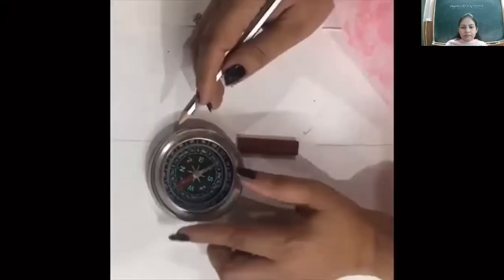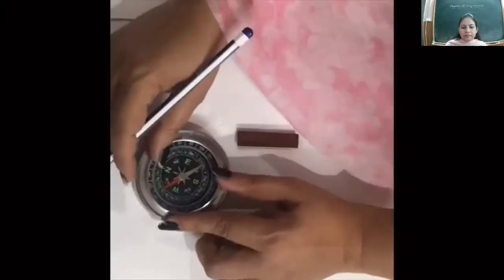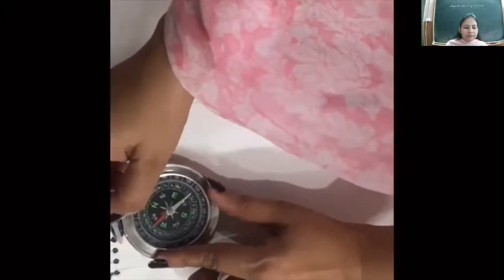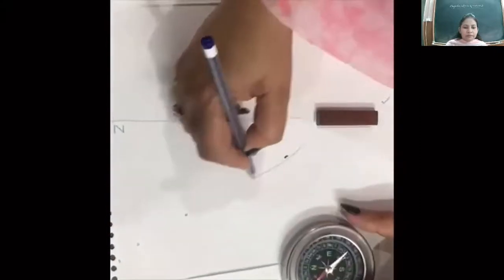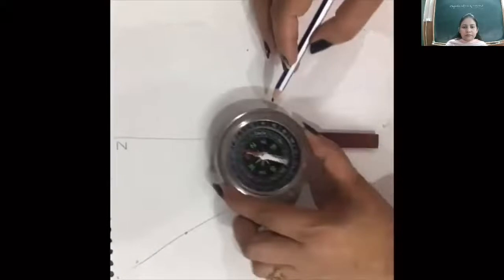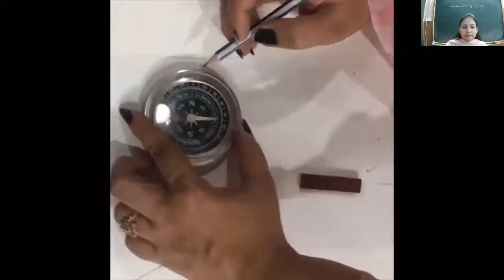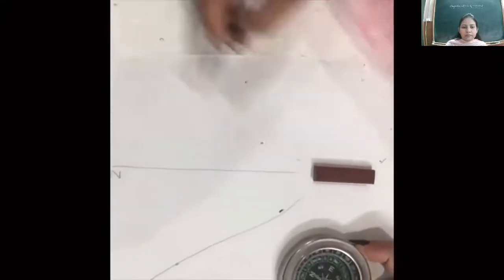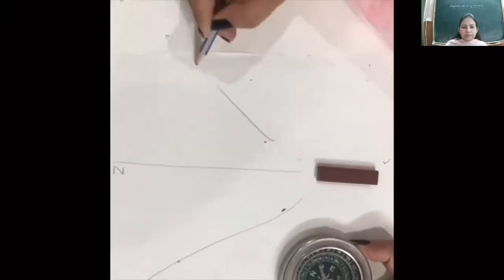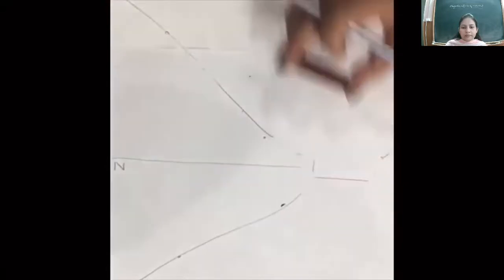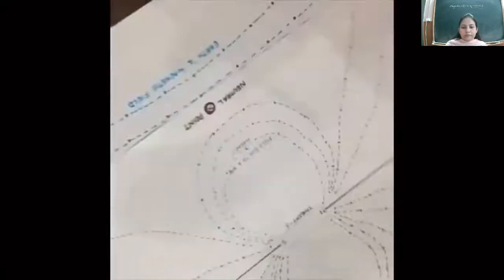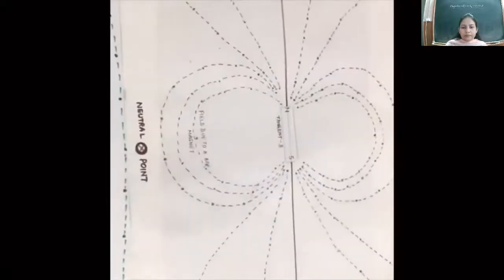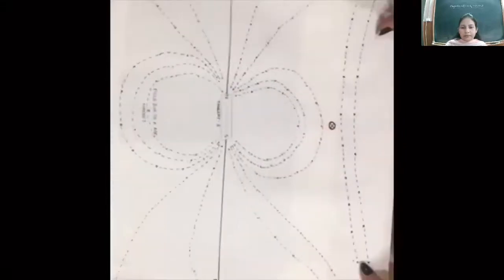In this video, you can see the needle is pointing outwards near one end of the magnet, and the same way here also the needle is going away outwards. I mark these points and on completing the pattern you will get something like this — this is the complete field line pattern.